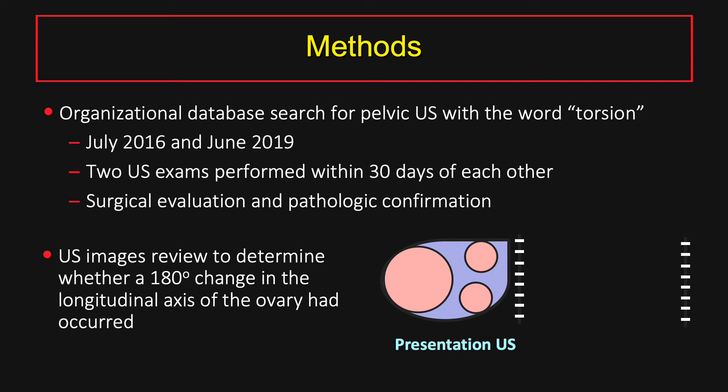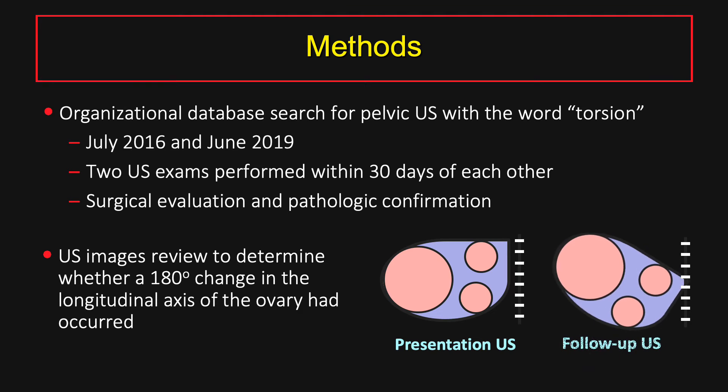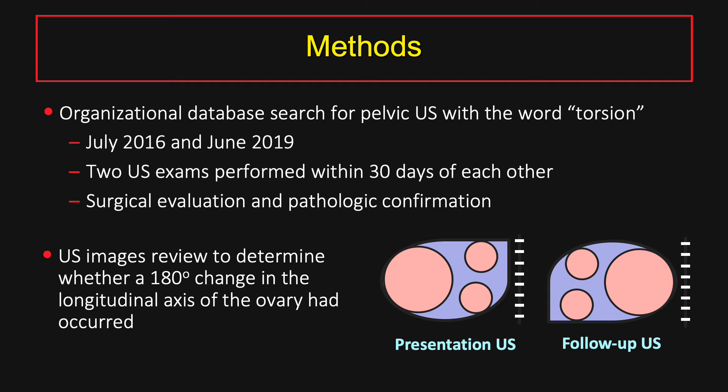Now that we've looked at the morphologic features of torsion, we'll move on to the methods of our research study. We performed an organizational database search of pelvic ultrasounds containing the word torsion between July 2016 and June 2019. Additional inclusion criteria included two ultrasound examinations performed within 30 days of one another, surgical consultation, and pathologic confirmation. The ultrasound images were reviewed to determine whether a 180-degree change in the longitudinal axis of the ovary had occurred — in other words, if the follow-up ultrasound showed that the orientation had flipped relative to the presentation ultrasound with a lead point cyst or mass.